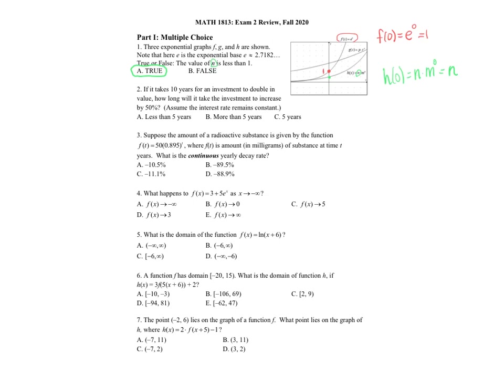If it takes 10 years for an investment to double, how long will it take for the investment to increase by 50%? We need to find the rate. Our model is P equals P naught times 1 plus the rate to the T. When T equals 10, the value is twice the initial. So I can plug in: 2P naught equals P naught times (1 plus R) to the 10, and use that to solve for R.